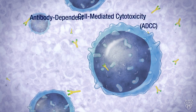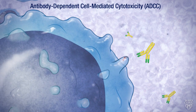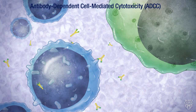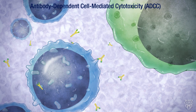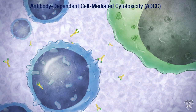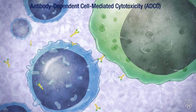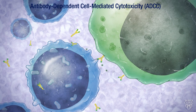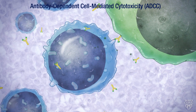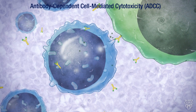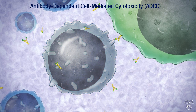In antibody-dependent cell-mediated cytotoxicity, or ADCC, the antibody and antigen complex of Rituxan to CD20 leads to the recruitment of natural killer cells, T-cells, and macrophages that recognize and bind to the Rituxan complex to CD20. After the cells bind to Rituxan, cytotoxic granules are released and penetrate the B-cell membrane, some creating pores to flood the cell, and some targeting the cell's nucleus and destroying it.